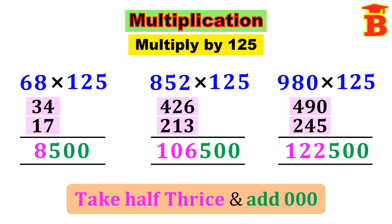Like this we can multiply any number by 5, 25, and 125 very quickly using this shortcut method.